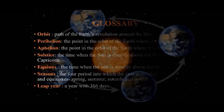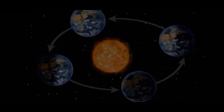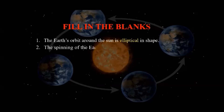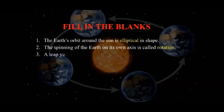Let's see what we know by answering the fill in the blanks. The Earth's orbit around the Sun is elliptical in shape. The spinning of the Earth on its own axis is called rotation. A leap year has 366 days.